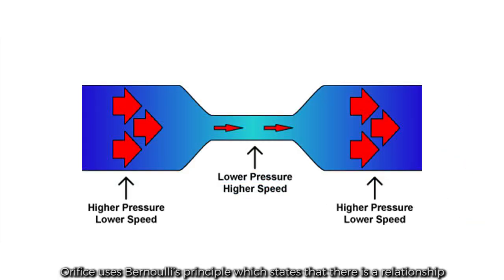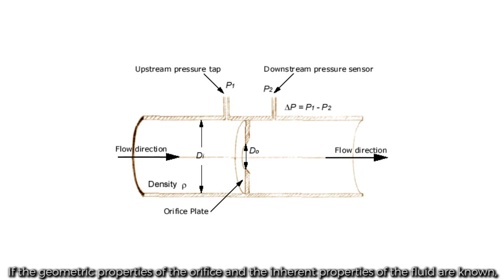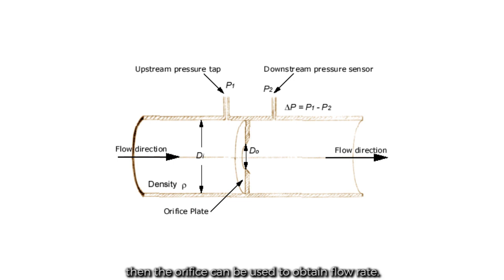Orifice uses Bernoulli's principle which states that there is a relationship between the pressure of the fluid and the velocity of the fluid. If the geometric properties of the orifice and the inherent properties of the fluid are known, then the orifice can be used to obtain flow rates.